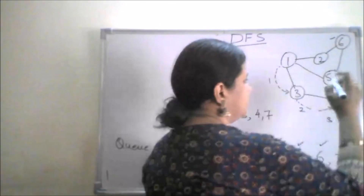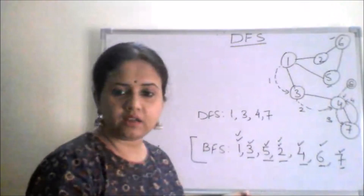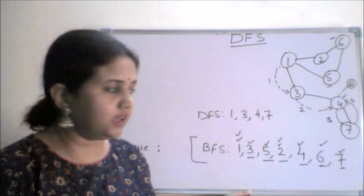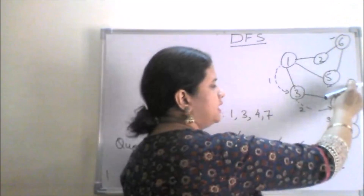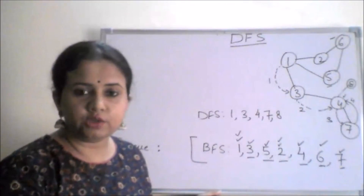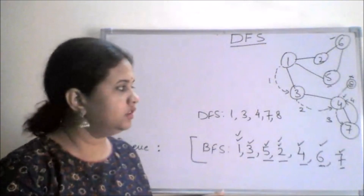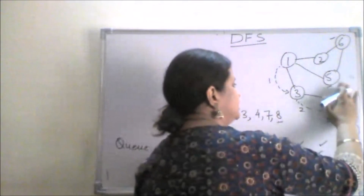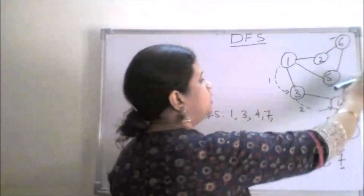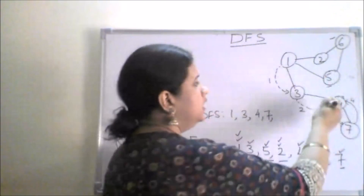When we backtrack to four, we again try to find if there is any unvisited node. For example, if four were associated with eight, we would add eight to the visited list after seven. But assume there is no other node — that was just to illustrate that if there were another node we would visit it too. Once we confirm there is no adjacent node, we go back again to three.